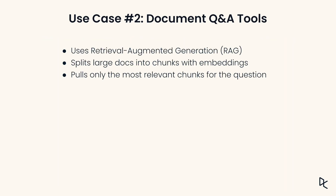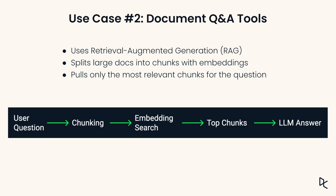Next, we have document Q&A tools, which depend on retrieval. They split large corpora into chunks, embed them, and pull back only the most relevant parts when you ask a question. This keeps your answers grounded in the source text, reduces hallucinations and builds trust.